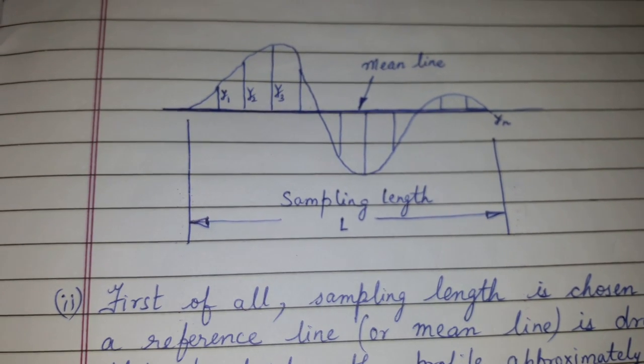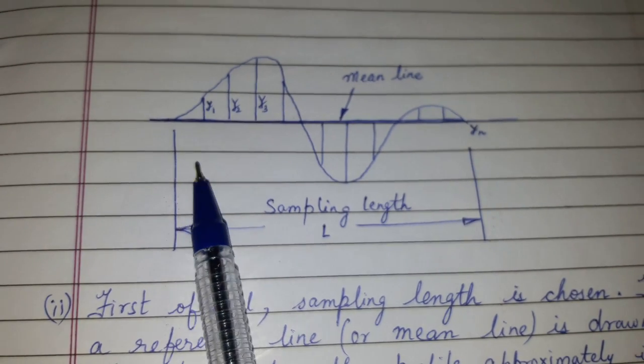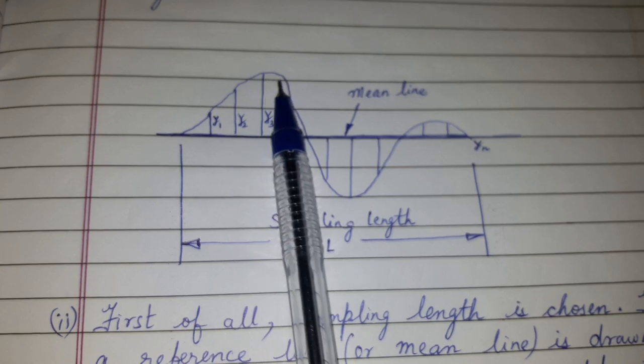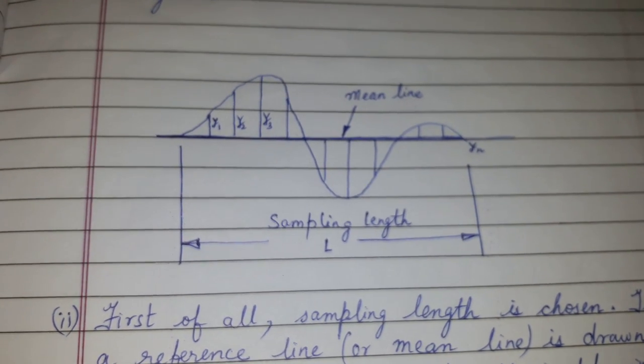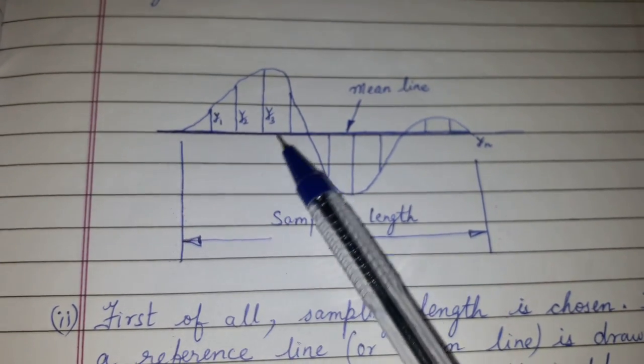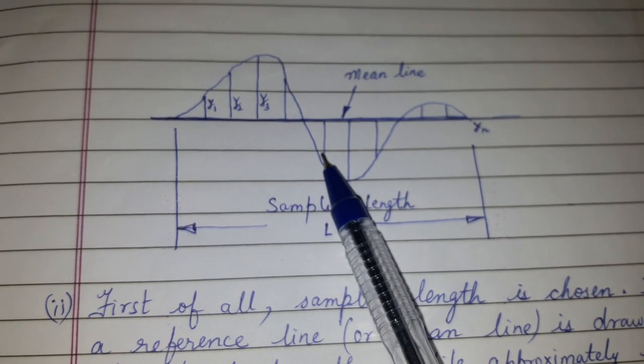So in short, Ra value is defined as the arithmetic average of the ordinates y1, y2, y3 till yn from the mean line, without considering the algebraic sign. We are not considering that y1 is positive or y5 or y6 is negative—it is considered without considering their signs.